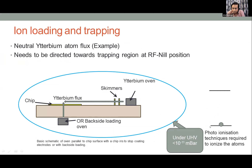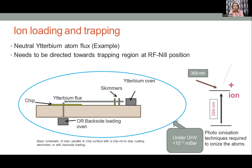To trap ions, we use a ytterbium oven that melts and vaporizes ytterbium atoms. Once the vapor reaches the trap region, we apply a two-photon ionization procedure. The entire setup is under vacuum at around 10^-11 mbar. The ionization process: first, atoms in the S1/2 ground state are excited with a 399 nm laser, then a second photon at 369 nm ionizes them. Once ionized, they are immediately trapped by the existing electric field.